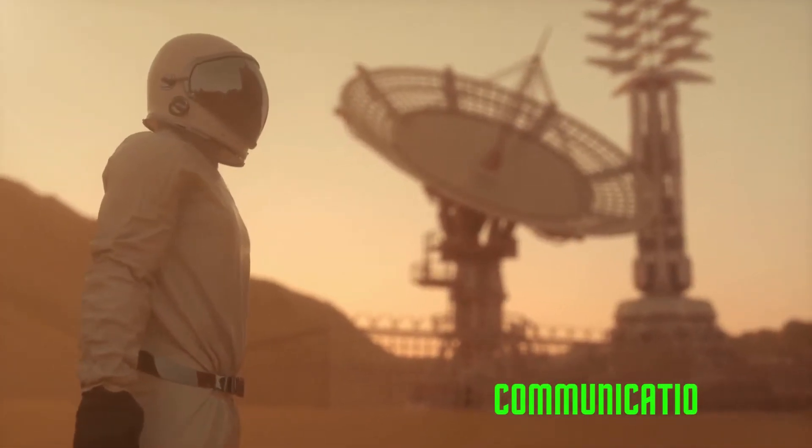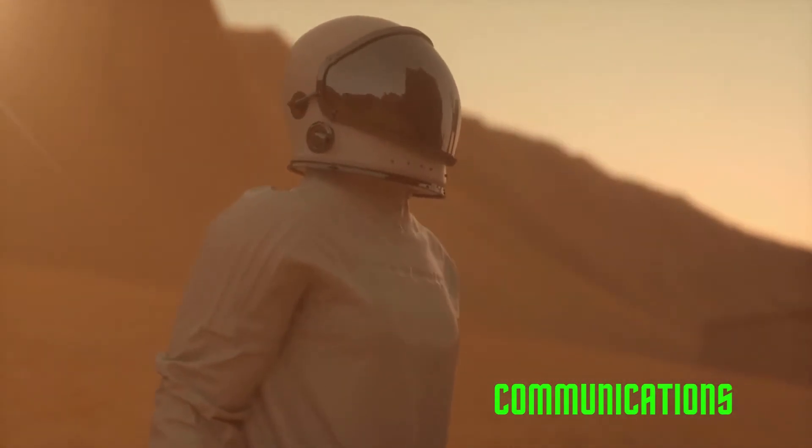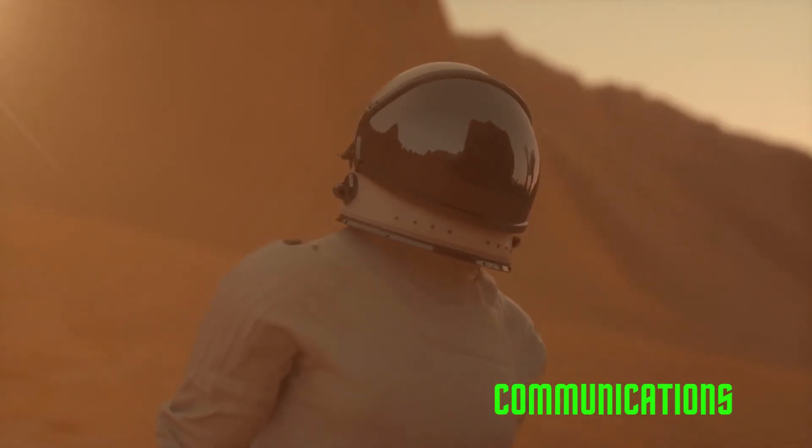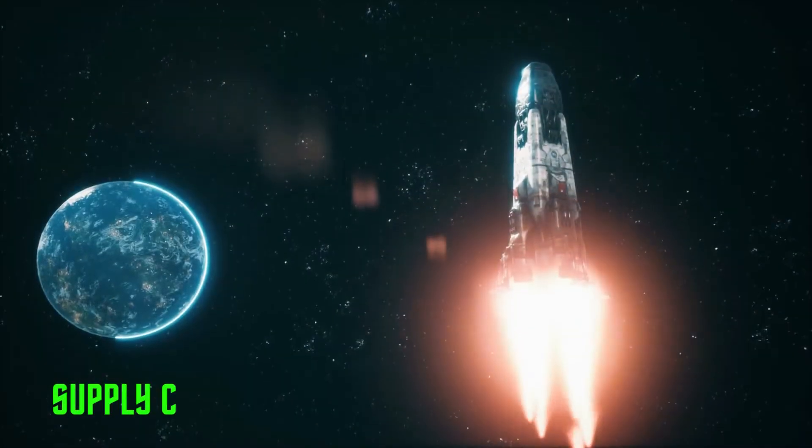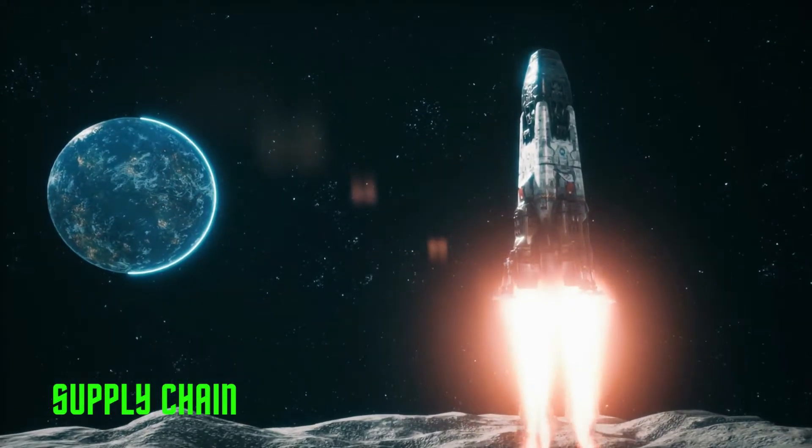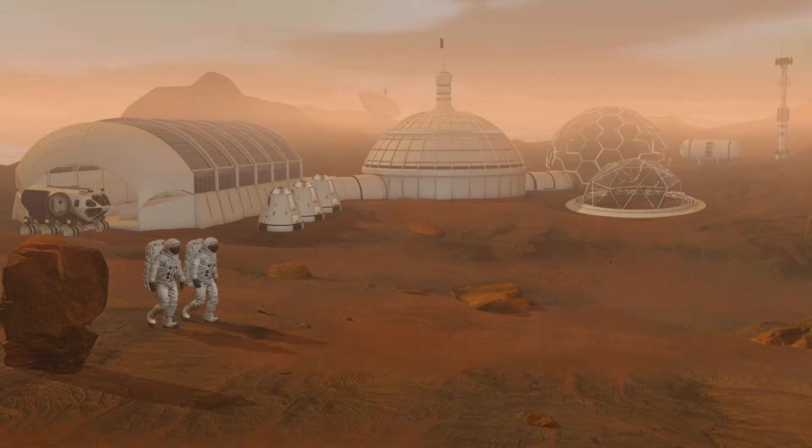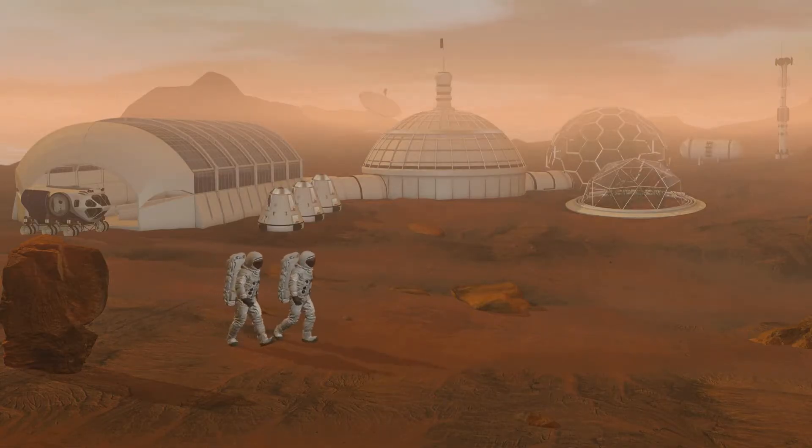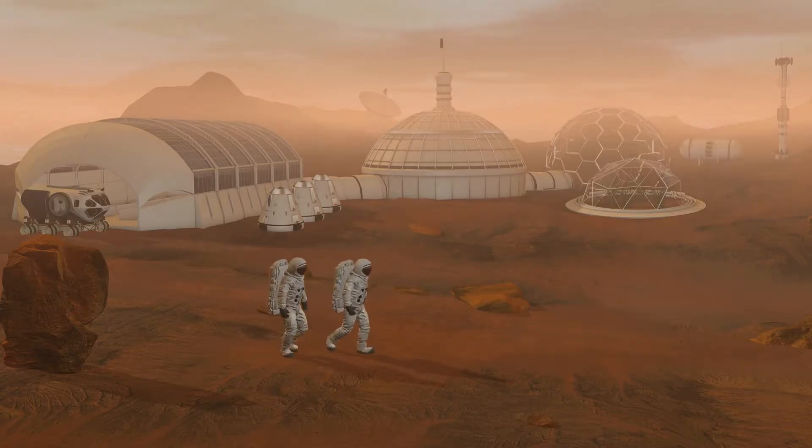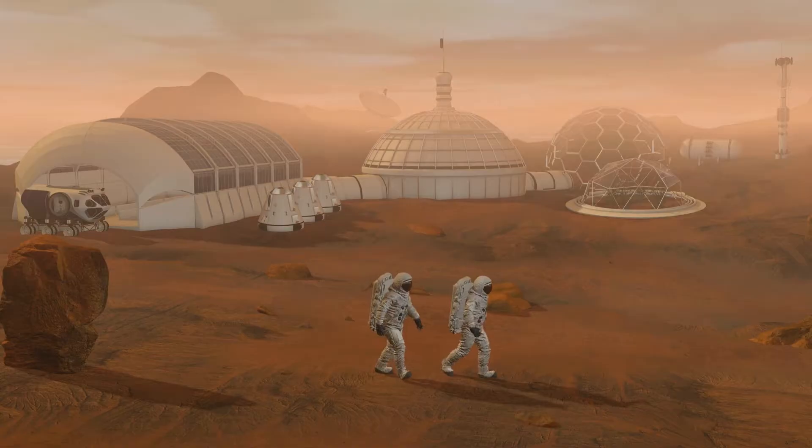Establishing reliable communication systems between the Lunar Outpost and Earth is crucial for mission success and astronaut safety. Additionally, maintaining a steady supply chain for essentials like food, equipment, and spare parts would be essential for the sustainability of the outpost. As we venture towards establishing a Lunar Outpost, we inch closer to realizing a future where humans become a multi-planetary species, expanding our horizons, and unlocking the boundless potential of the universe.